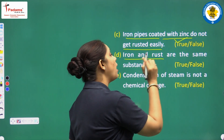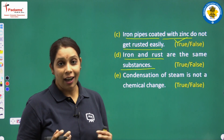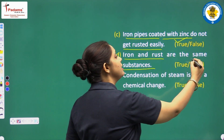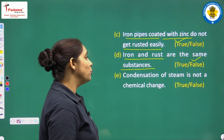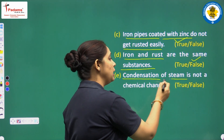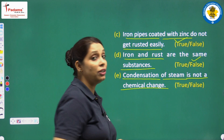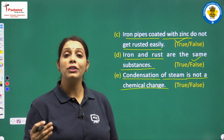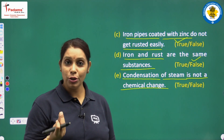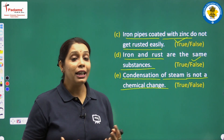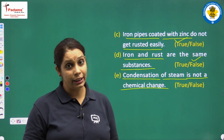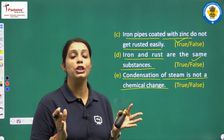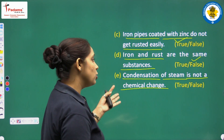Next: iron and rust are the same substances. Are they the same? No, they are not the same. So this statement is false. Next: condensation of steam is not a chemical change. Yes, it is not a chemical change. When we condense steam, after some time we get water droplets. Changes in state are a type of physical change. So this statement is true.